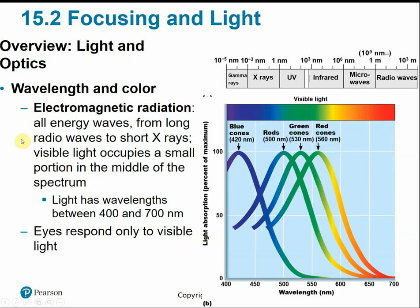In the last section, we talked about the anatomical structure of the eyeball and how it was suited for our sense of vision. So it receives light stimuli. Light is basically electromagnetic radiation — energy that travels in the form of waves. The electromagnetic spectrum includes gamma rays, X-rays, UV, all the way to radio waves. The visible light spectrum is only a small sliver of the entire electromagnetic range.